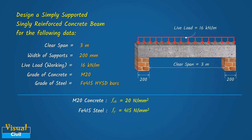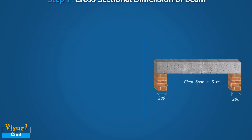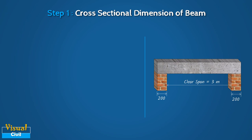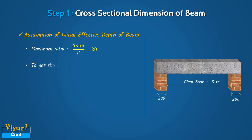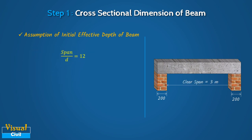As per SP34-1987 table 1.1, let us start with Step 1 by deciding the initial cross-sectional dimensions of the beam. The initial effective depth can be assumed based on vertical deflection criteria by referring to clause 23.2.1 of IS456, which gives the maximum values of span to effective depth ratios. For a simply supported beam, the maximum span to depth ratio is 20. To get a safer section for bending, we assume it between 12 to 15. For this problem, let us adopt the span to depth ratio equal to 12.